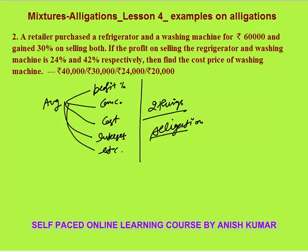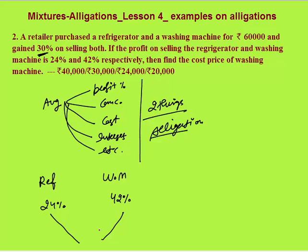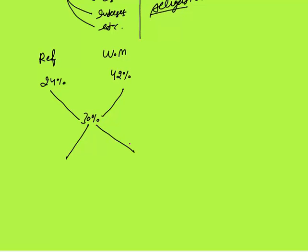In this case, average profit percent 30 percent is given. Let's see how we can apply allegation and solve this in less than a minute. Refrigerator profit is 24 percent, washing machine profit is 42 percent, and the average profit on selling both is 30 percent. Again subtract smaller from larger: 42 minus 30 is 12 percent, 30 minus 24 is 6 percent. The ratio is 2 is to 1.